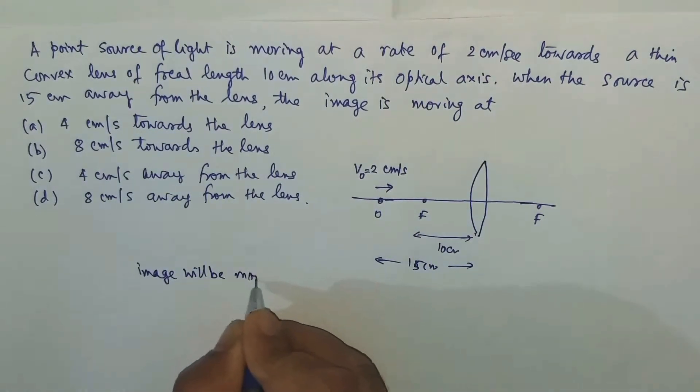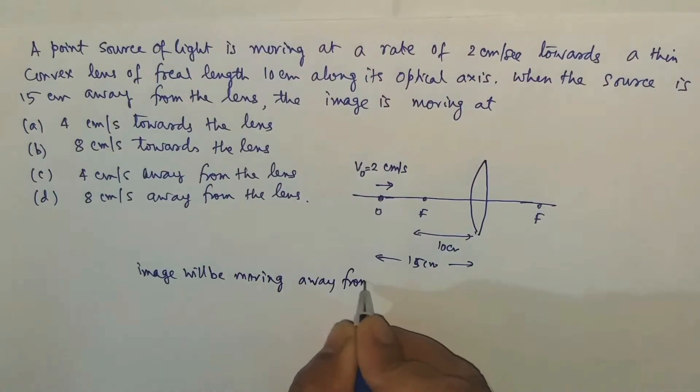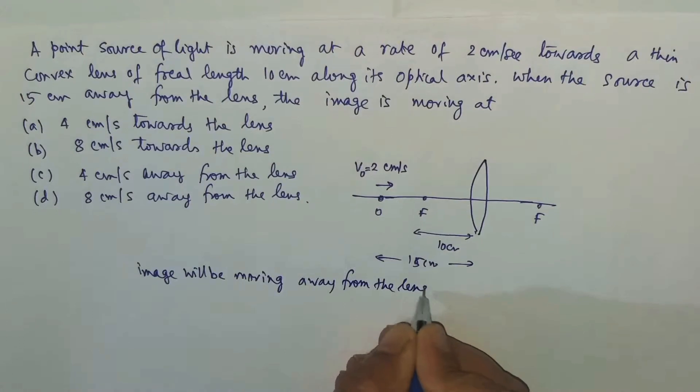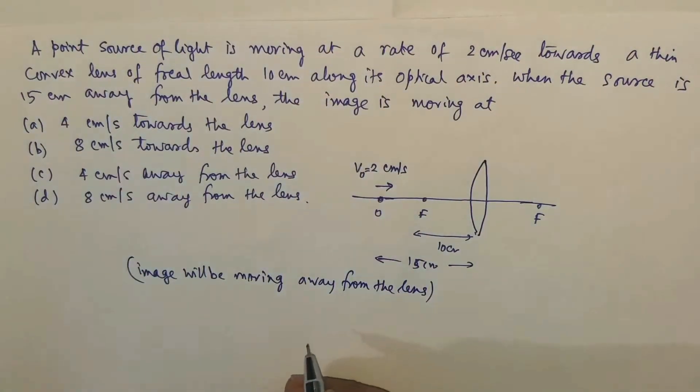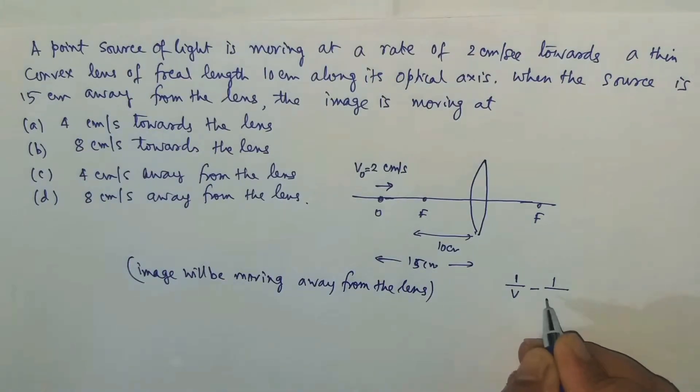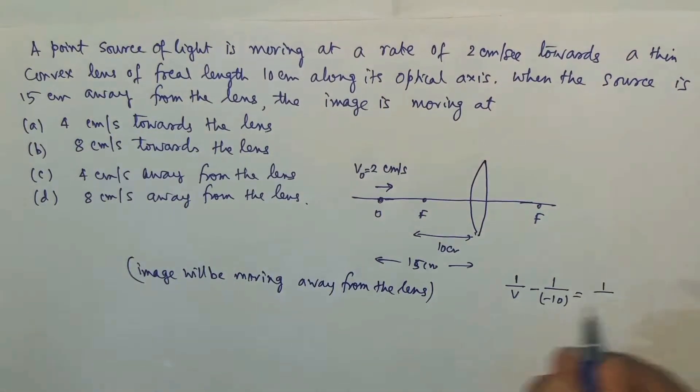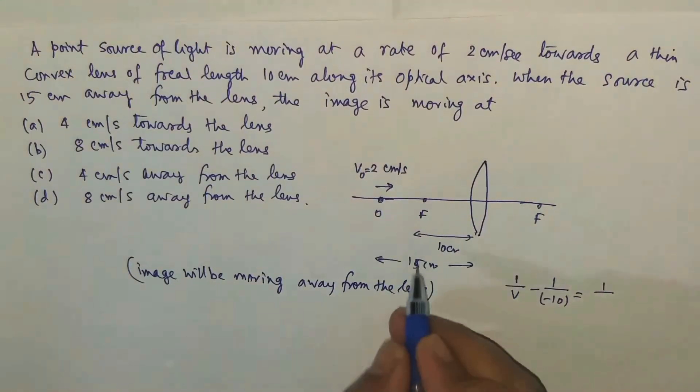Now the calculation: where is the image formed? Let's first use 1/v - 1/u = 1/f. u is equal to minus 10, sorry, u has been given as 15, so u will be minus 15, and focal length is equal to 10.